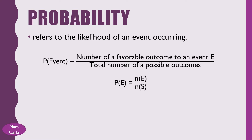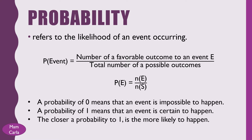In symbol, we have: probability of an event equals the cardinality of an event over the cardinality of the sample space. Obtaining a probability of 0 means that an event is impossible to happen, while obtaining a probability of 1 means that an event is certain to happen. The closer a probability is to 1, the more likely it is to happen.